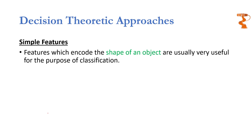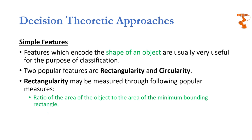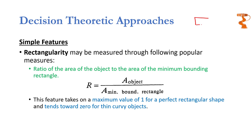Having covered size features, we now look at features that encode the shape of an object. Two very popular shape features are rectangularity and circularity. Rectangularity will have a larger value for rectangular objects. Rectangularity is defined as the ratio of the area of the object to the area of the minimum bounding rectangle. For a rectangular object, the minimum bounding rectangle has the same shape, so rectangularity is near 1 — the area of the object is nearly equal to the area of the minimum bounding rectangle.